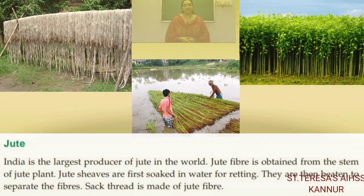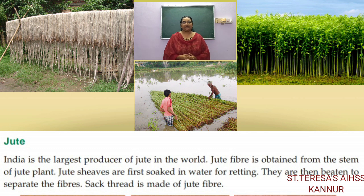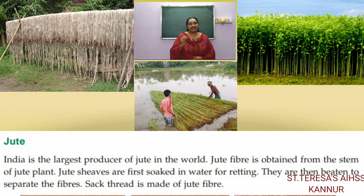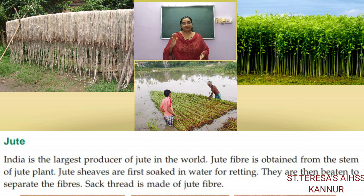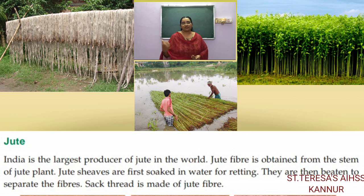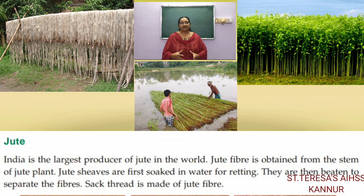The next crop is jute. Jute is a type of plant from which we get jute fiber, and India is the largest producer of jute in the world. The jute fiber is obtained from the stem of the plant — it looks like bamboo. The sheaves of the stem are cut, soaked in water, left for retting, then beaten up and the fiber is separated. We use jute fiber for making sacks to carry rice and other groceries.